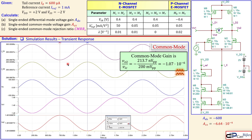This concludes example number six about the cascode current source and active-loaded differential pair using M1 and M2. If you have any questions or comments about this example, please let me know. Don't forget to like and share these videos to help reach more people on these interesting topics. Thanks for your cooperation and see you next time.